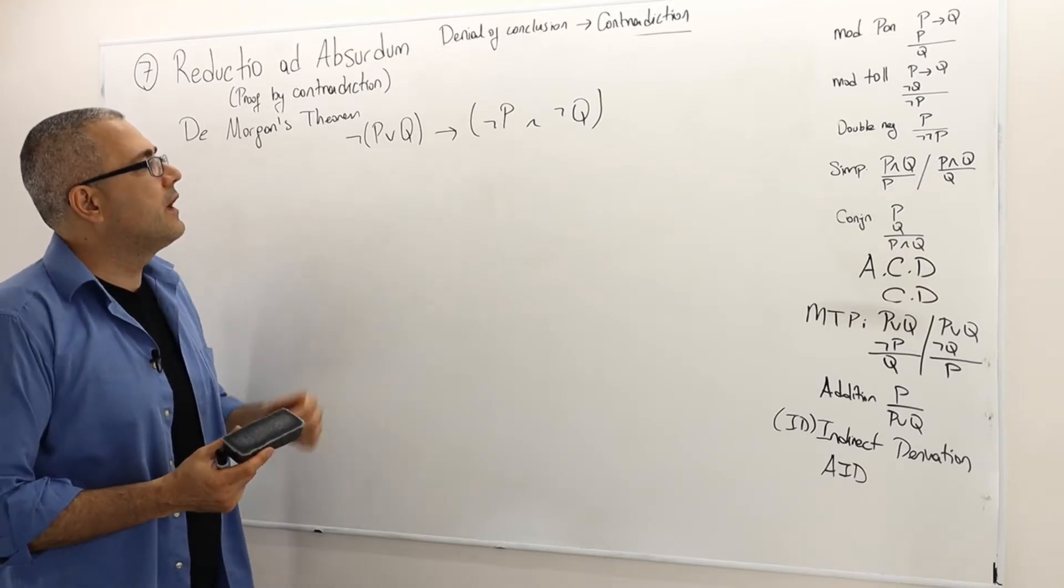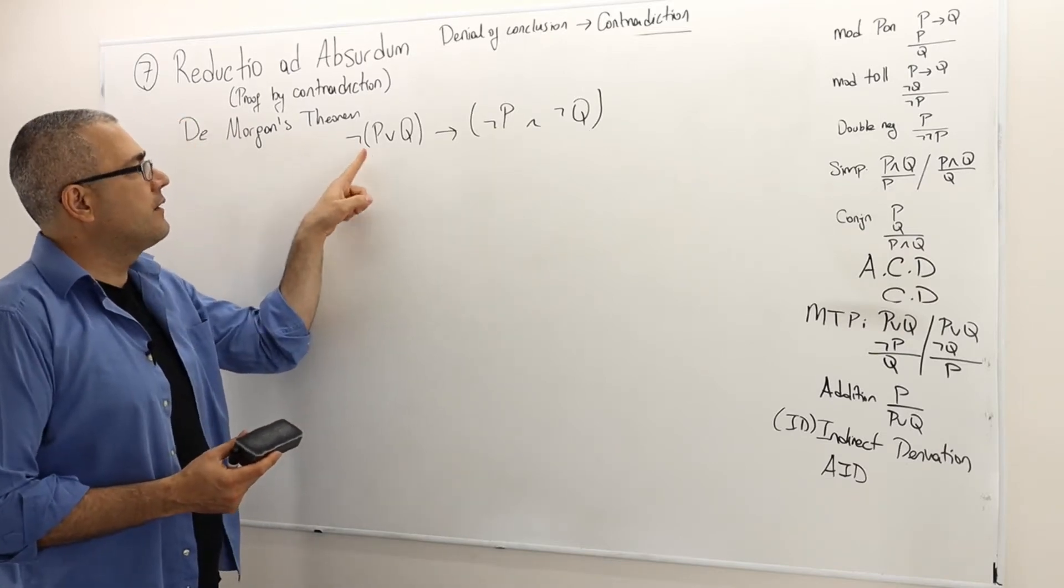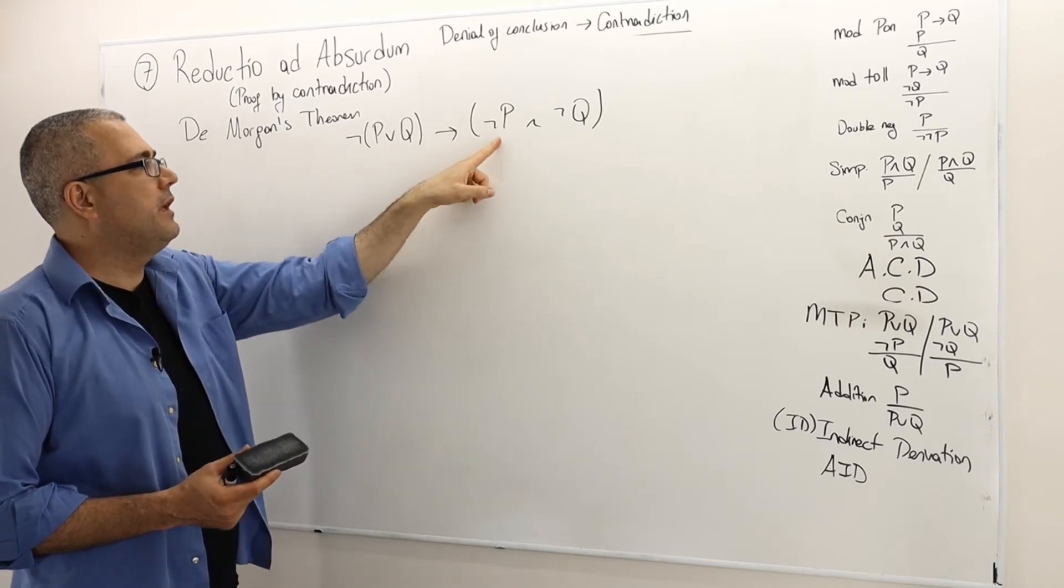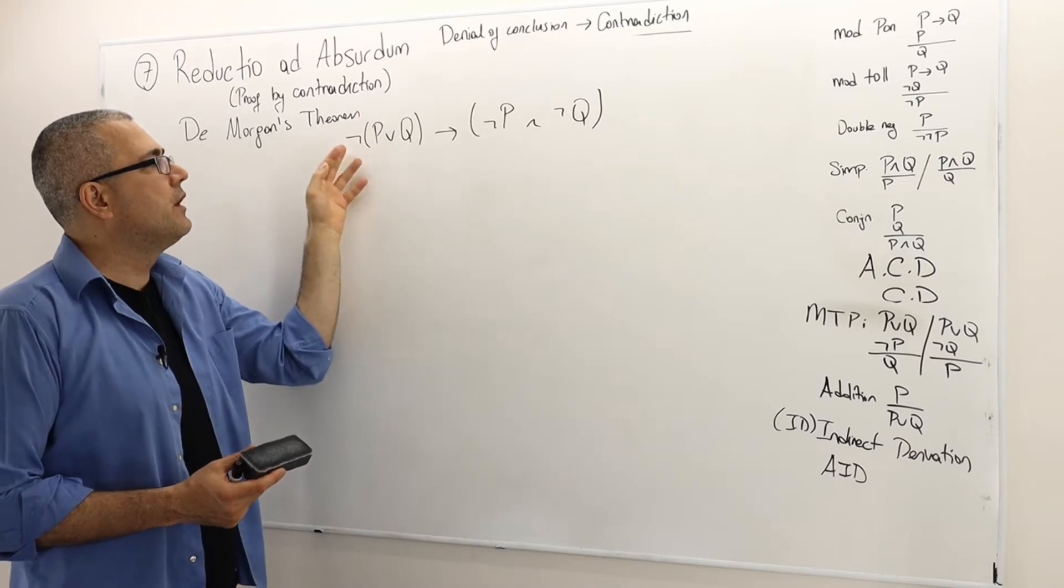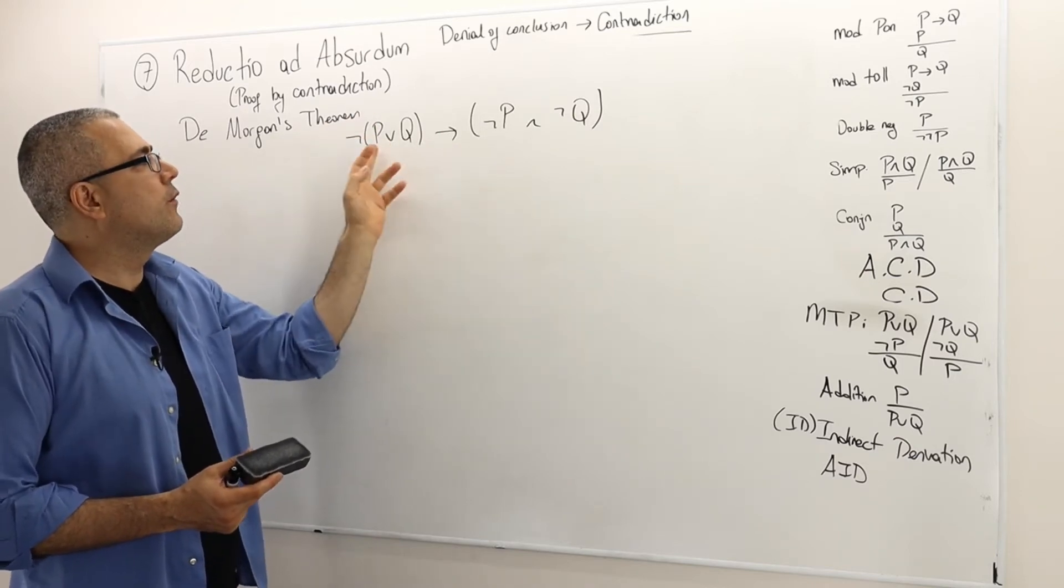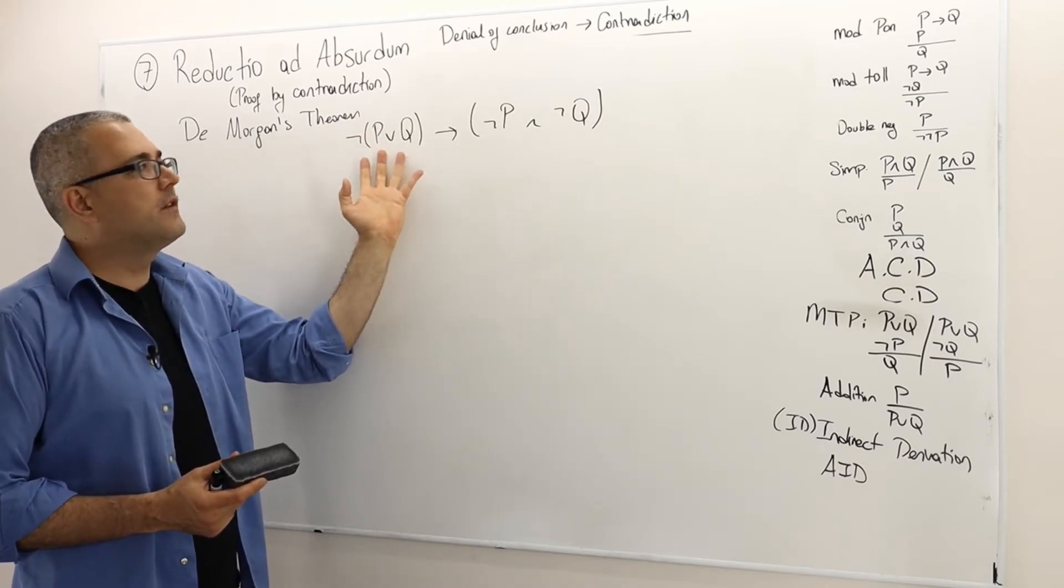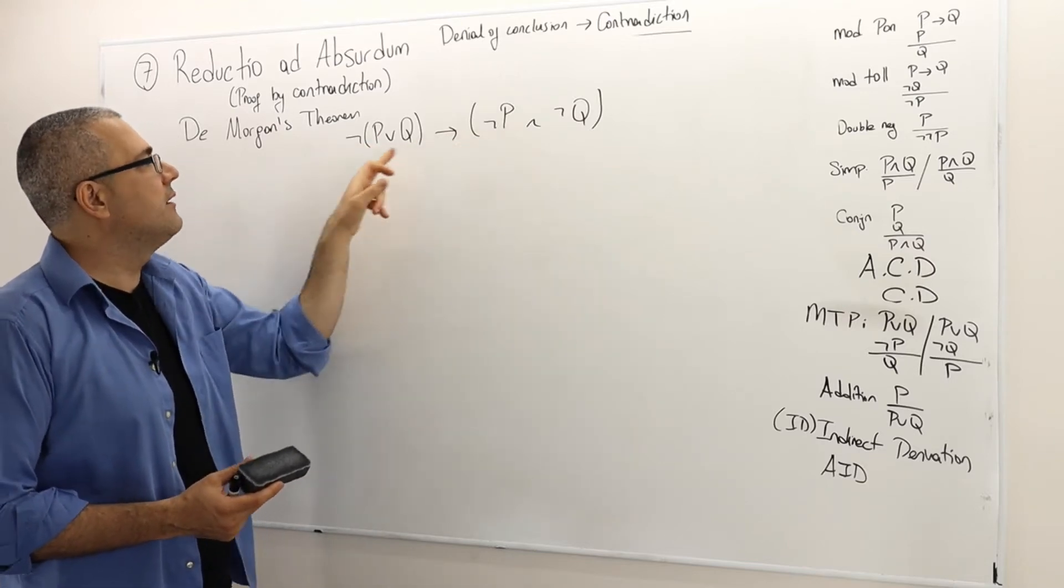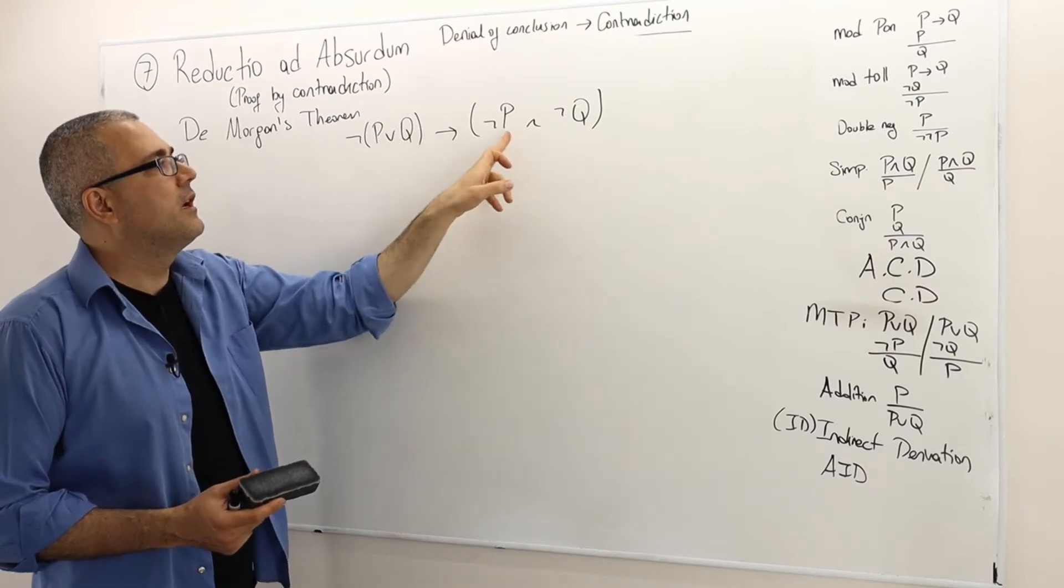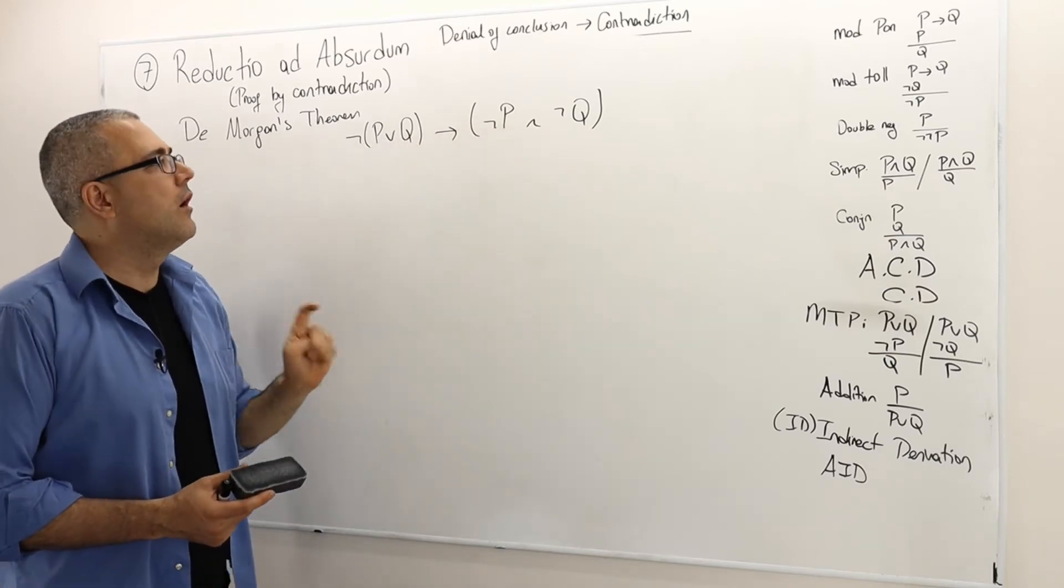So it states the following: not P or Q implies not P and not Q. So this is some sort of how we distribute this negation sign over this disjunction sentence. Or becomes and, and P and Q becomes not P and not Q.